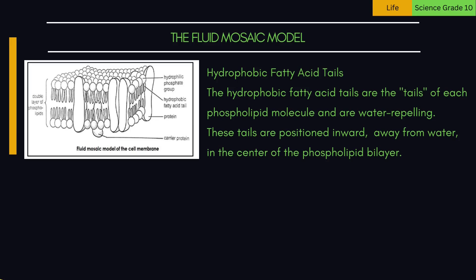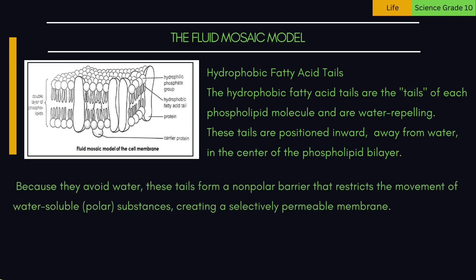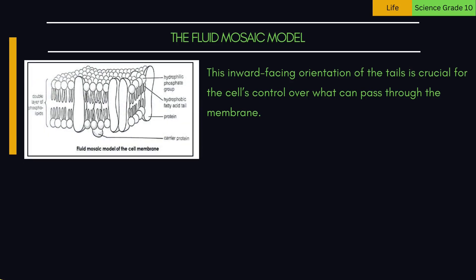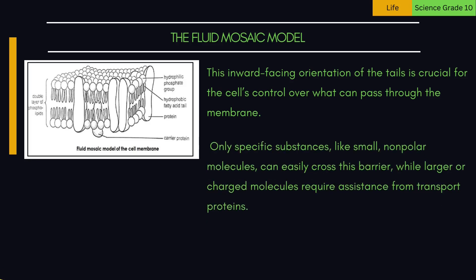2. Hydrophobic fatty acid tails — the tails of each phospholipid molecule are water-repelling and positioned inward, away from water, in the center of the phospholipid bilayer. Because they avoid water, these tails form a non-polar barrier that restricts the movement of water-soluble, polar substances, creating a selectively permeable membrane. This inward-facing orientation is crucial for the cell's control over what can pass through — only small, non-polar molecules can easily cross this barrier, while larger or charged molecules require assistance from transport proteins.